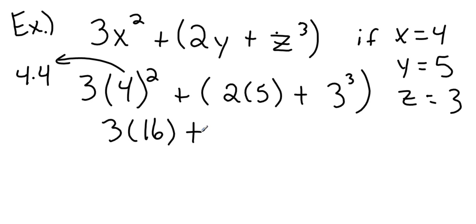I'm going to go ahead and do my multiplication. 2 times 5 is going to give me 10. And now I need to take 3 to the 3rd power. So that's going to be 3 times 3 times 3. 3 times 3 gives me 9. 9 times 3 gives me 27.